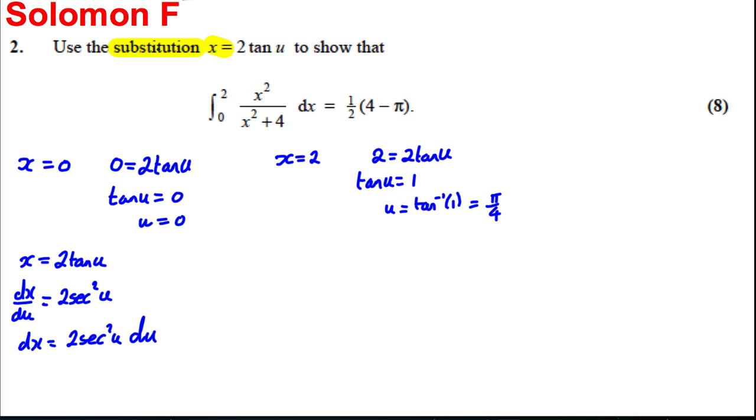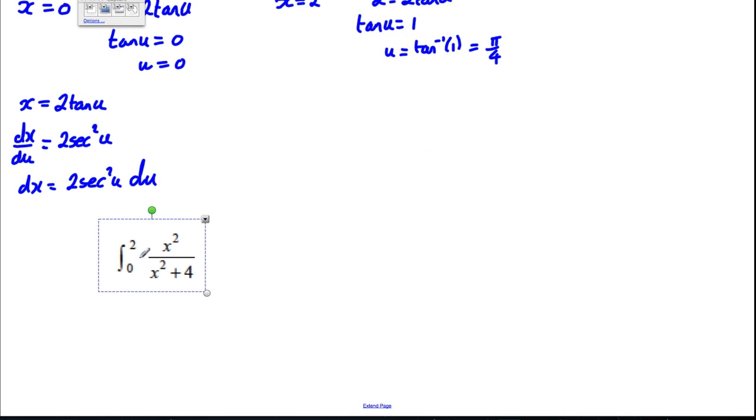Now we're in a position to integrate this, and I'm just going to copy that here and bring that down and substitute in u's where x's are, etc. So this integral actually turns into the integral between zero and π by four.